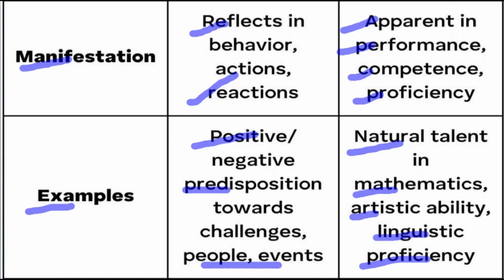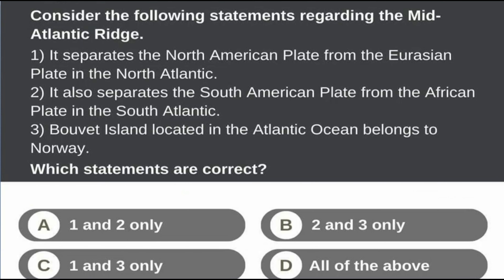Let's ask more questions. Consider the following statements regarding the Mid-Atlantic Ridge. Option one: it separates the North American Plate from the Eurasian Plate in the North Atlantic. Option two: it separates the South American Plate from the African Plate in the South Atlantic. Option three: it is located in the Atlantic Ocean and belongs to Norway.